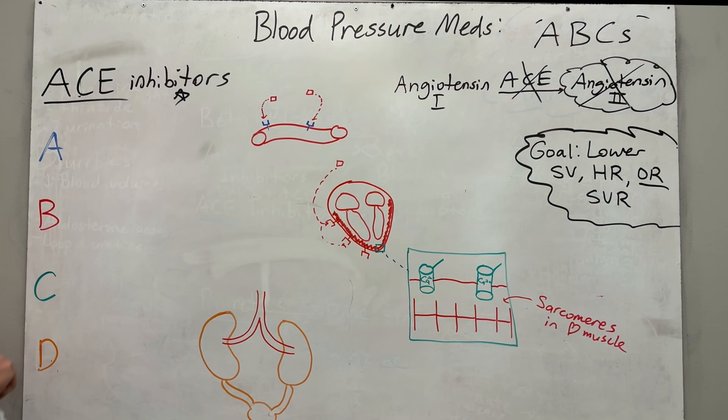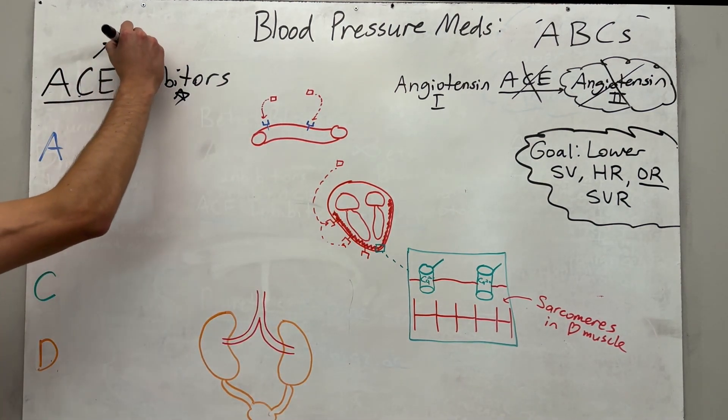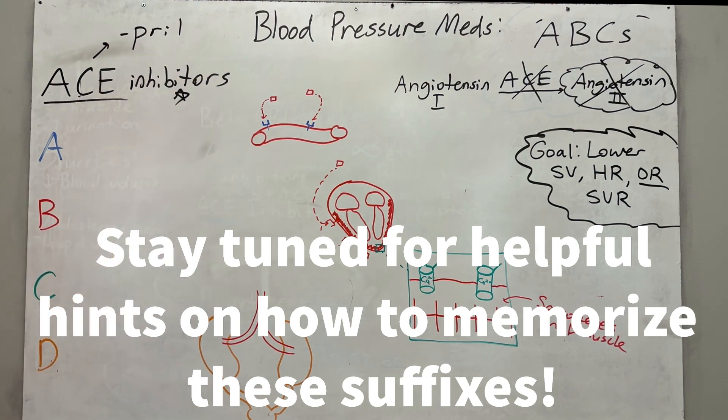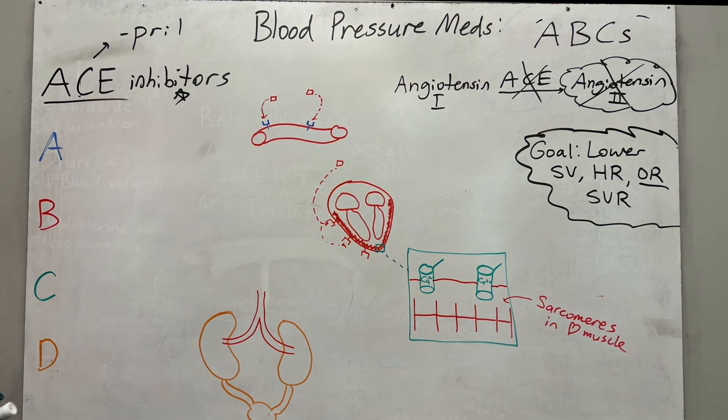Wonderful. Now, in order to remember ACE inhibitors, you need to remember that these will like to end in pril. Okay. So one example of a medication will be called lisinopril. Alrighty. So that's one blood pressure medication, ACE inhibitor. Great.